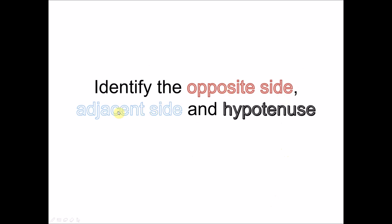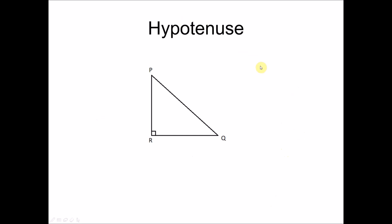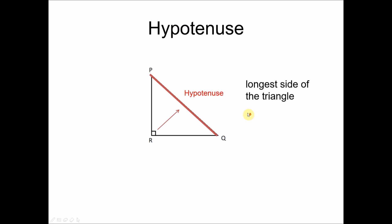The first part of this video is to learn how to identify the opposite side, adjacent side, and the hypotenuse. You already learned about the hypotenuse in Form 1 when studying Pythagoras' theorem. As a quick revision: the hypotenuse is the side of a right angle triangle that is opposite to the 90-degree angle, and it is also the longest side.